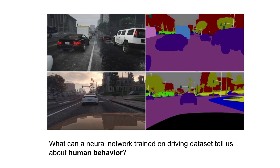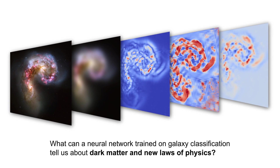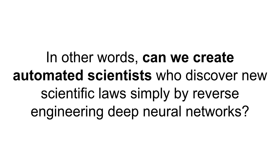Can we discover new laws of science by reverse engineering such networks? For example, if you take a deep network trained on driving data, can you interrogate and reverse engineer it to find something new about human behavior — for example, if it finds out that on sunny days drivers are more casual and pedestrians are more casual, can it make a discovery that sun causes happiness? Or can you take a classifier that distinguishes between cats and dog images and find out something new about animal evolution that biologists don't yet know? And can you take a neural network trained on galaxy classification and find out properties of dark matter — something physicists are working really hard to find out today? I know this sounds crazy and I'd love to hear from you in the comments.